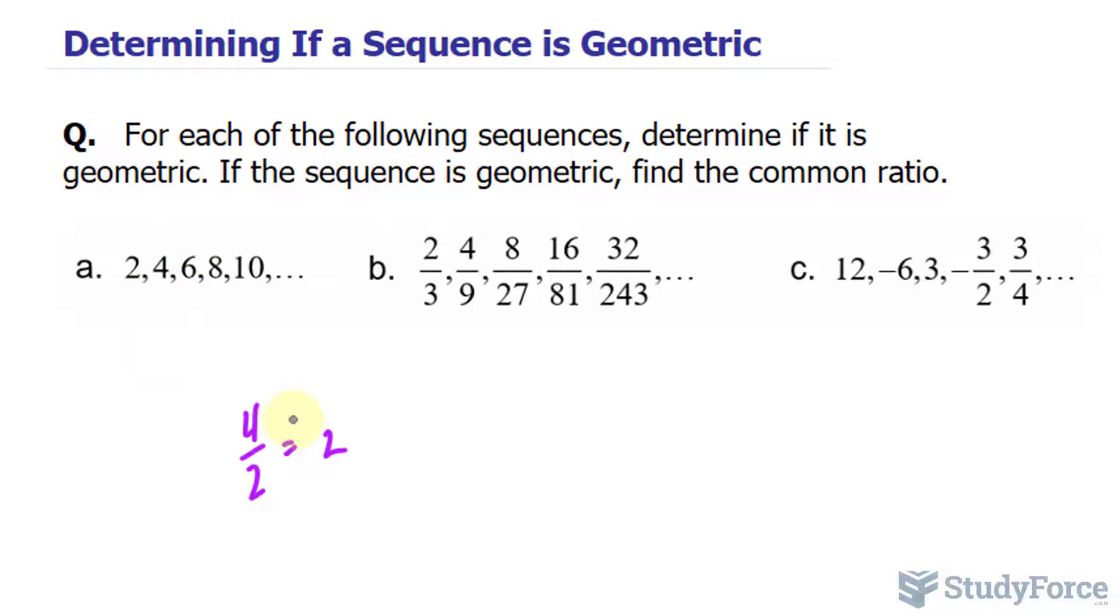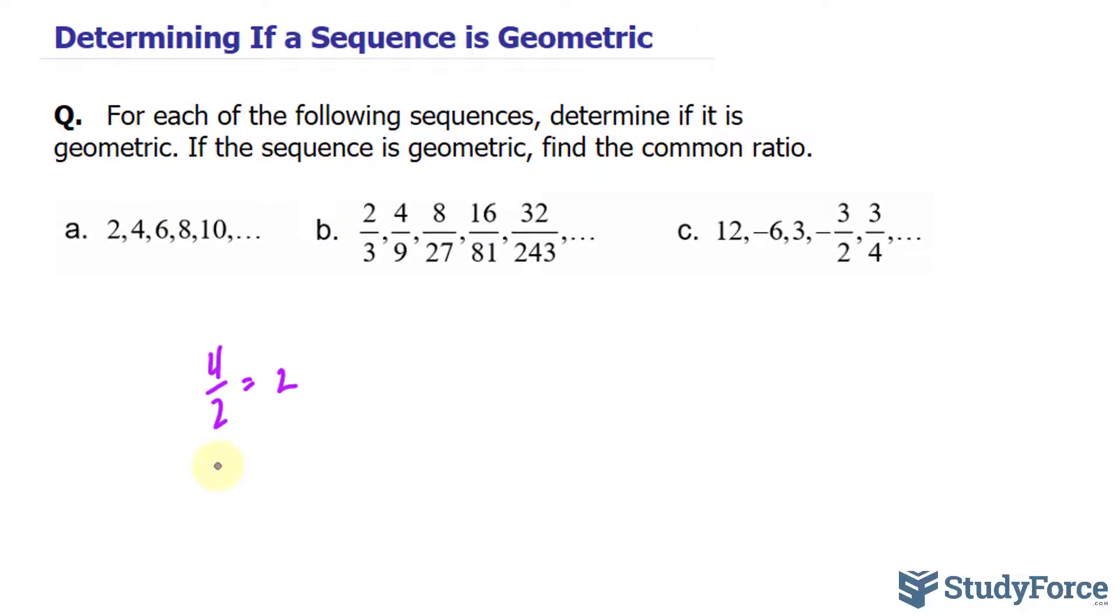Multiplying 4 times 2 gives me 8 and not 6. And another way to show you is if I take 6 divided by 4, I get 3 over 2. These two numbers are not common, therefore this is not geometric.